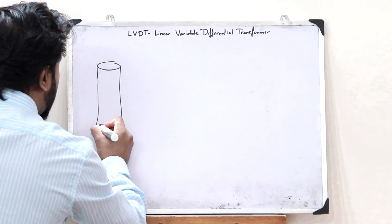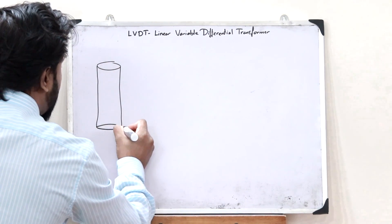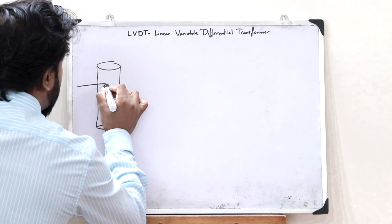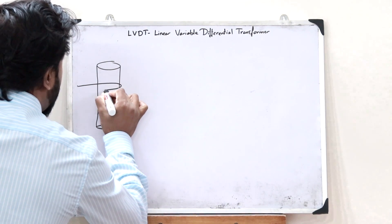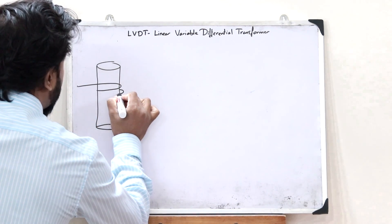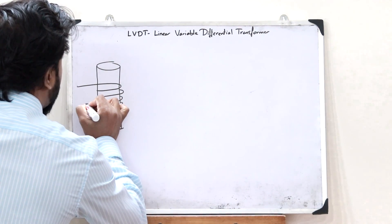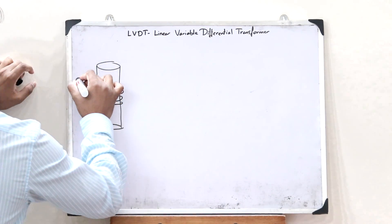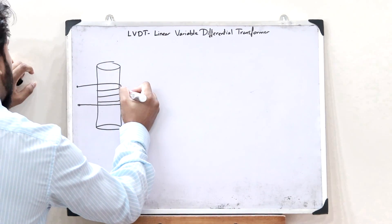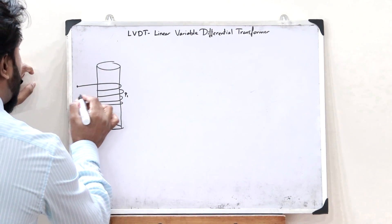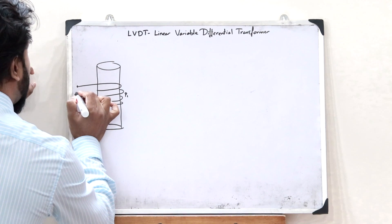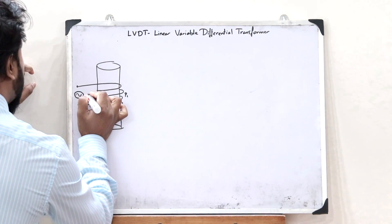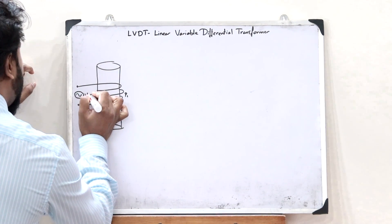An LVDT contains a cylinder-like shape. On top of this, we wind a primary winding — let us call it P1. This P1 is connected to an input AC voltage, let this be VIN.